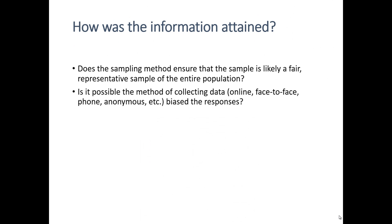Another question we need to ask when evaluating secondary data is how was the information attained? First, does the sampling method ensure that the sample is likely to be a fair representative sample of the entire population? Secondly, is it possible that the way the data was collected may have actually biased the original responses? These are two questions that we also have to worry about when we design our own study.